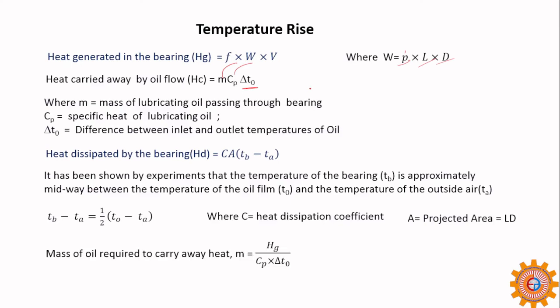Sometimes you will be asked to find the mass of oil required to carry away heat: M = heat generated / (Cp × ΔT). Heat generated and heat carried away or dissipated are equal — if one set of data is given, use the corresponding formula.